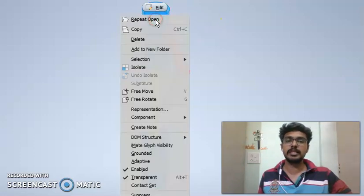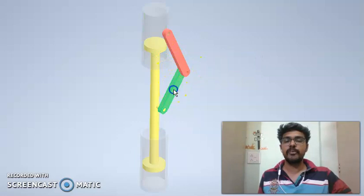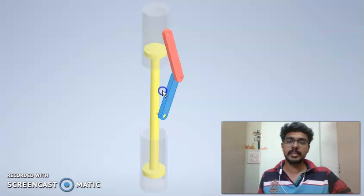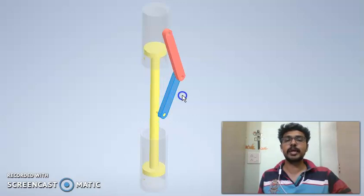Now since this is the fourth inversion, I am fixing this link. After fixing this link, if I am trying to rotate link 2, I observe that the red link or link 3 is oscillating and the yellow link or link 1 is reciprocating.